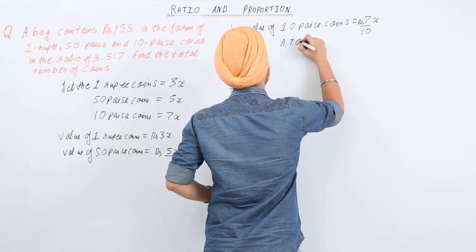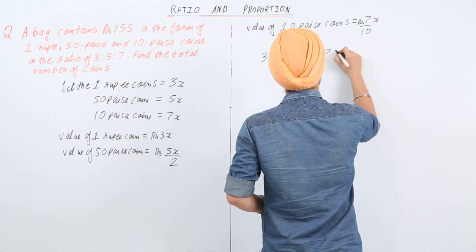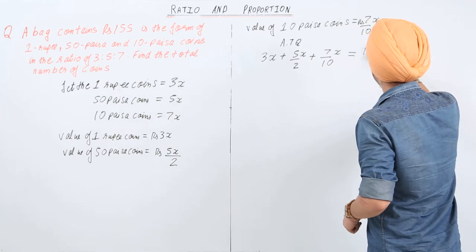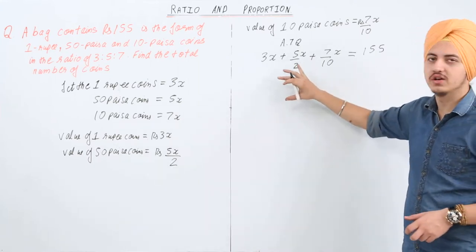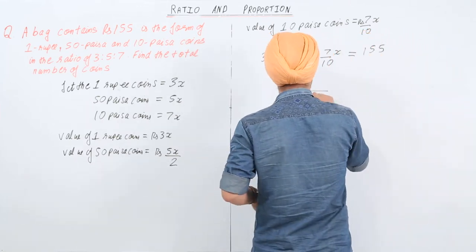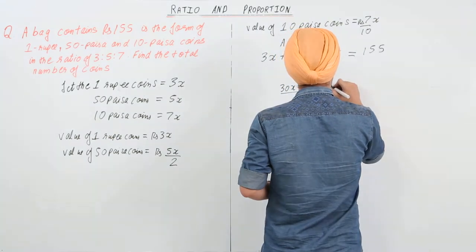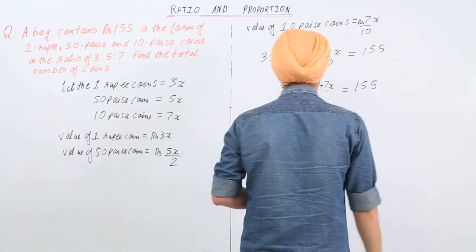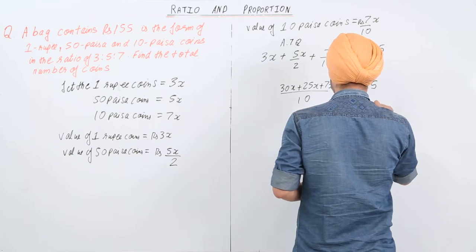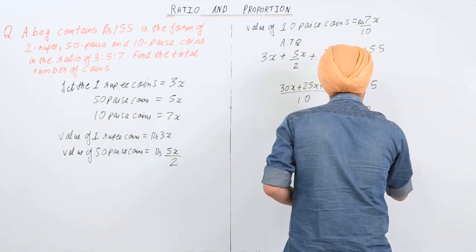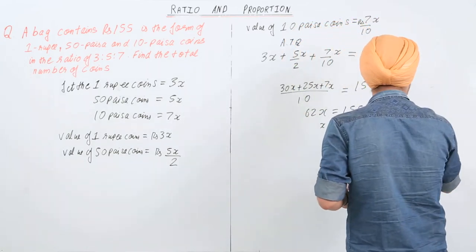According to the question, we have 3x plus 5x/2 plus 7x/10 equal to 155 rupees. We can find the value of x from here. Taking LCM equal to 10, we get 30x plus 25x plus 7x equal to 1550. From here, 62x equals 1550, so x equals 25.